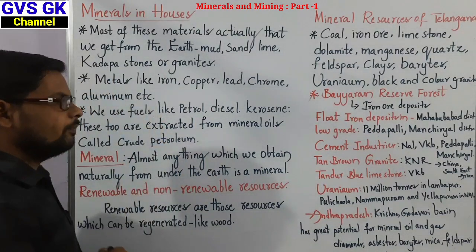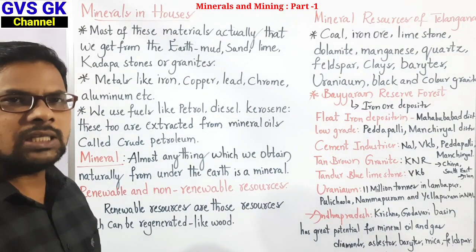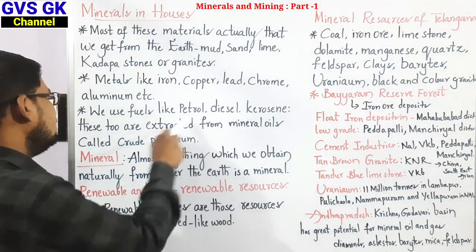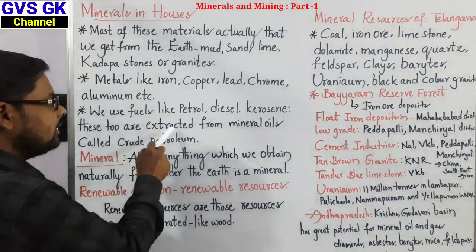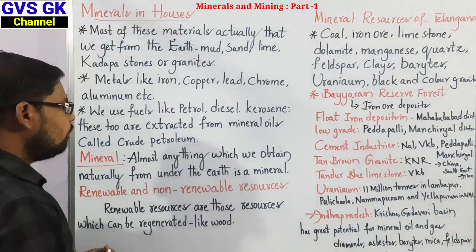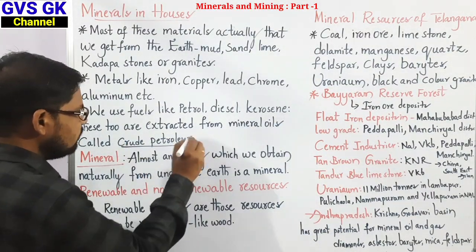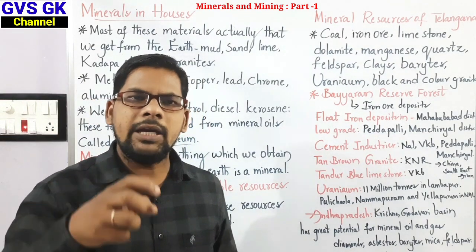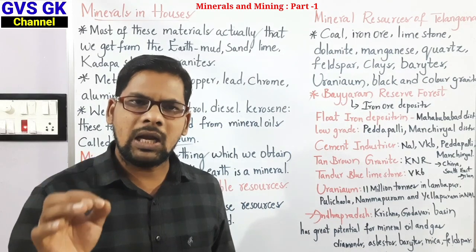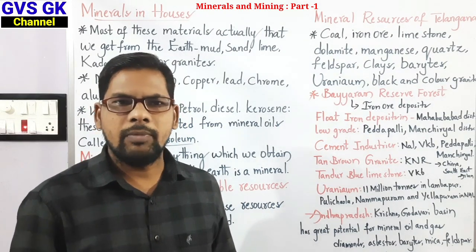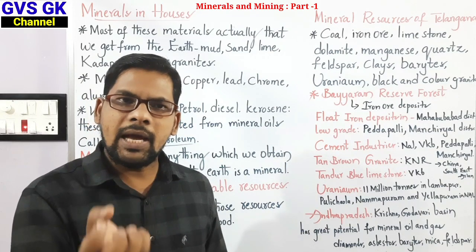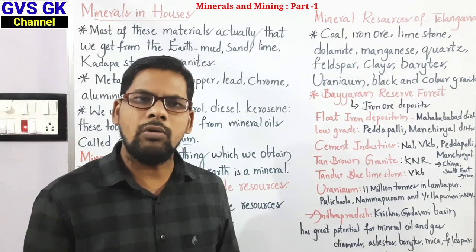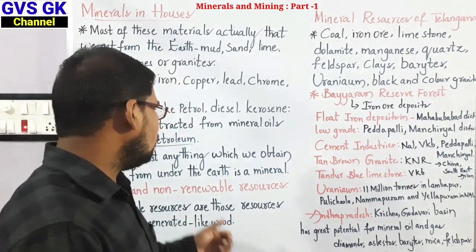We use fuels like petrol, diesel, and kerosene, and these are extracted from mineral oils called crude petroleum. Crude petroleum is obtained naturally from the ground in a thick, dark liquid form. Petrol, diesel, and kerosene are all extracted from crude oil.